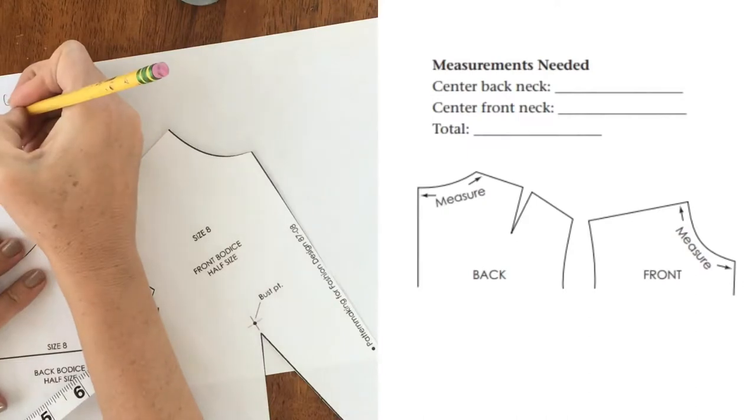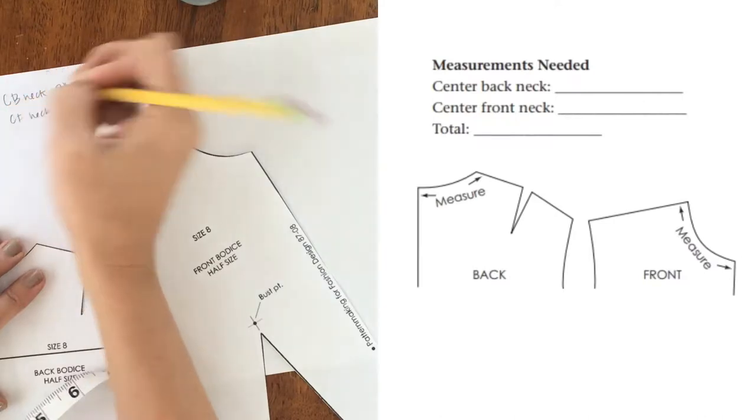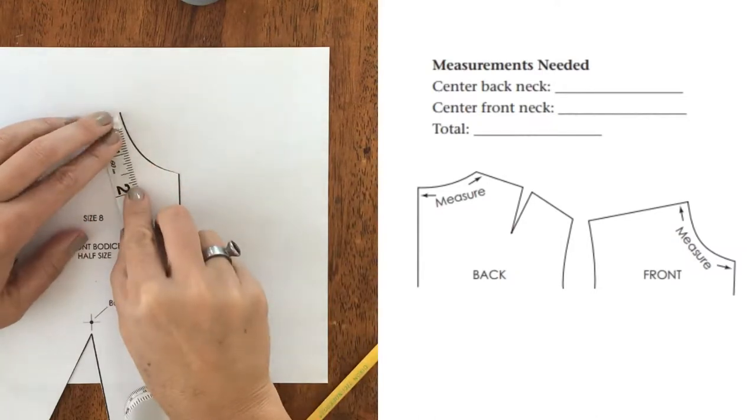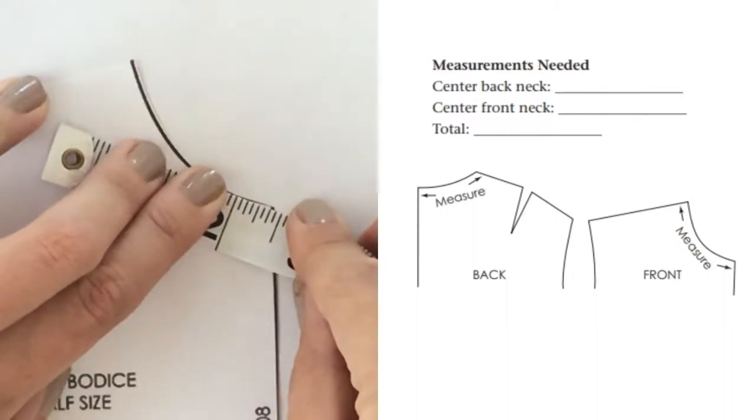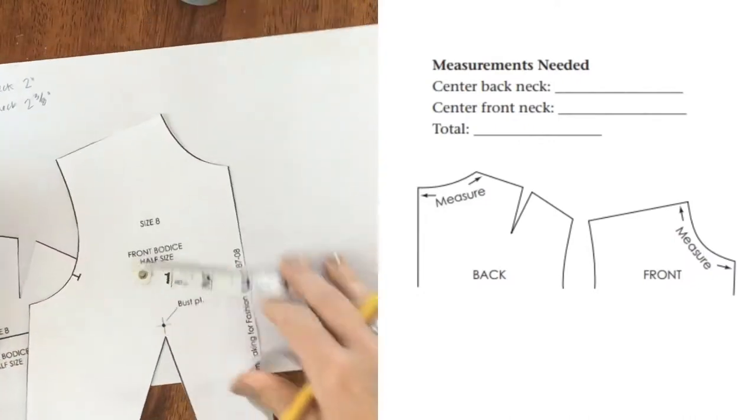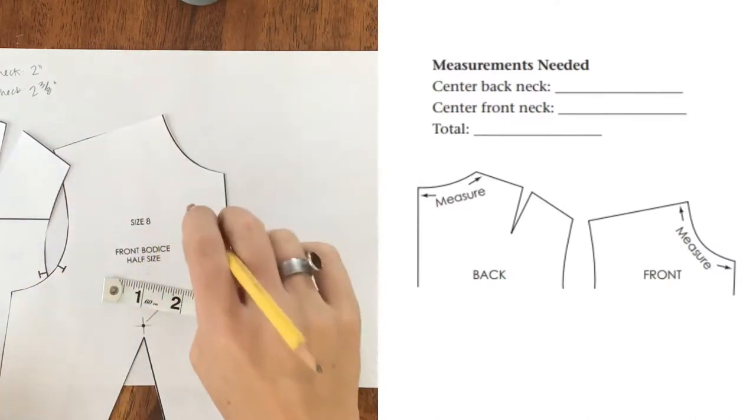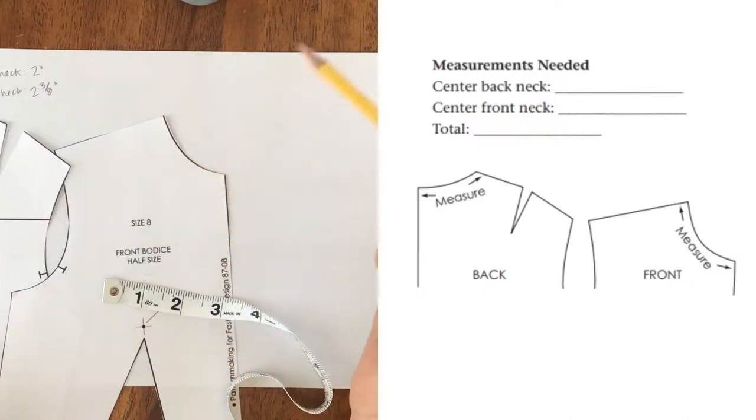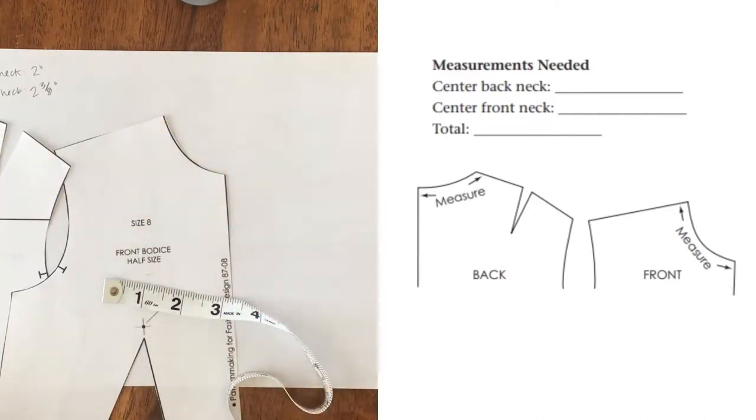And now I also want to write my center front neck. Looks like mine is two and three eighths. Measure yours. Don't just use my measurements because a lot of times when I print out these slopers, depending on the printers, sometimes they scale them bigger and smaller. And also the different versions of our books, I've noticed that they've come bigger and smaller. So make sure you measure yours because you might actually get a different measurement than what I have.